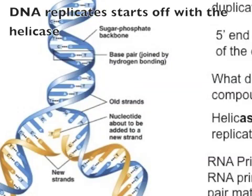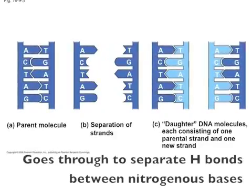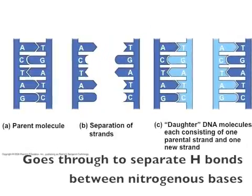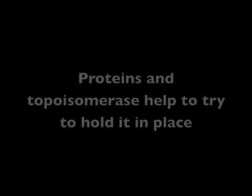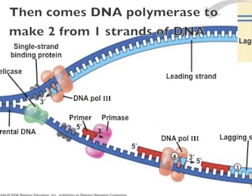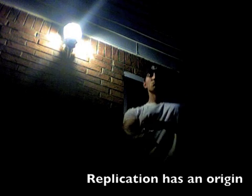DNA replicates, starting with helicase that separates hydrogen bonds between nitrogenous bases. Topoisomerase helps hold it in place, then DNA polymerase comes in to make a 2-for-1 DNA replication.